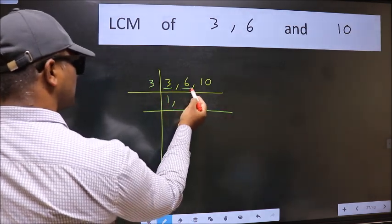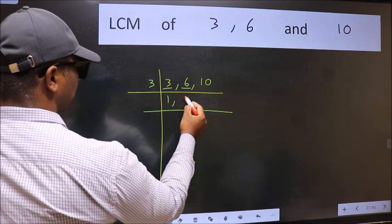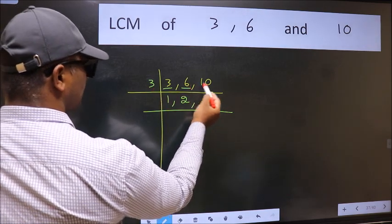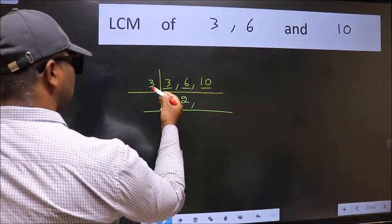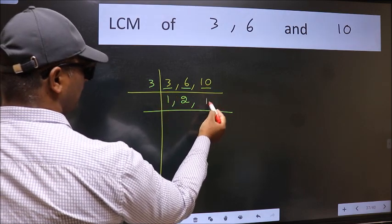The other number 6. When do we get 6 in 3 table? 3 times 2 is 6. The other number 10. Not divisible by 3, so we write it down as it is.